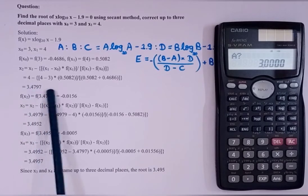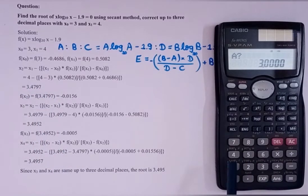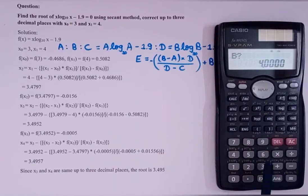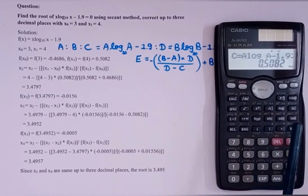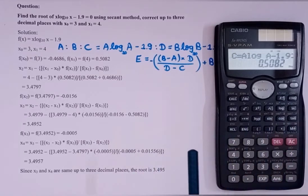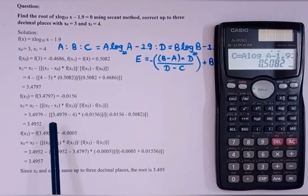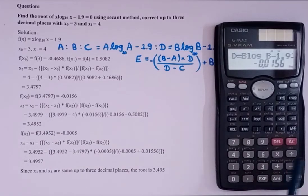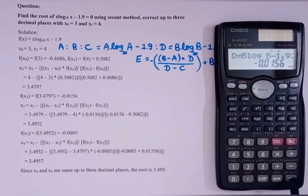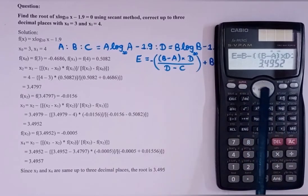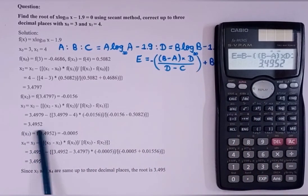Then press equal to again. Now a will be equal to 4, and since we got x₂ = 3.4797, that will be our new b. Change b to 3.4797, then press equal to equal to equal to equal to. We get c as 0.5082 (which we had before), then press equal to and we get d as -0.0156, which is f(x₂). Press equal to and we get e = 3.4952, which is x₃.